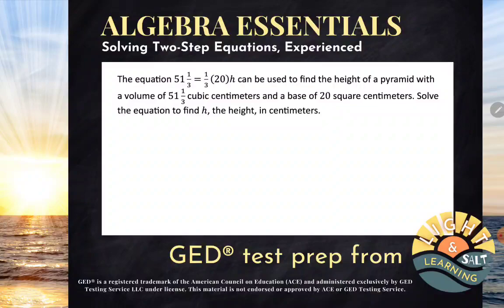It says the equation 51 and one-third equals one-third times 20h can be used to find the height of a pyramid with a volume of 51 and one-third cubic centimeters and a base of 20 square centimeters. Solve the equation to find h, the height, in centimeters.